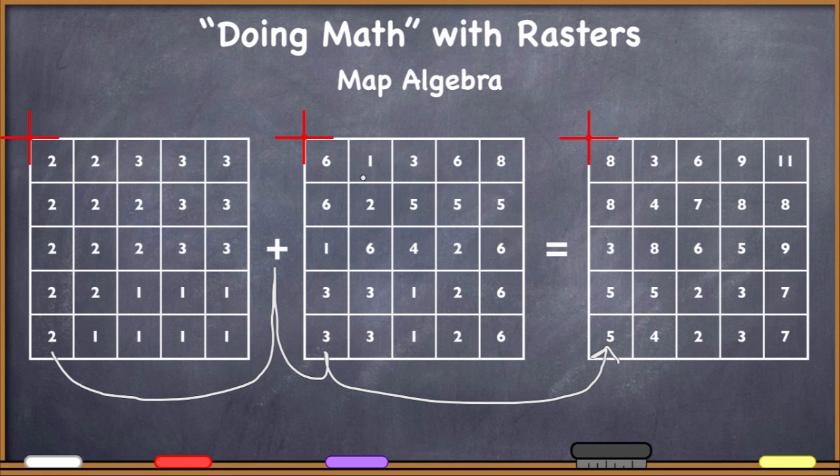Raster number one, raster number two is laying right on top of raster one, we're looking at them side by side. But these two are laying on top of each other. And then I have this third raster that's going to be produced, which is also going to be in the exact same geographic position.